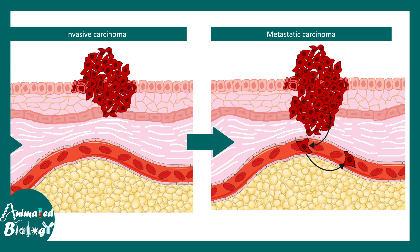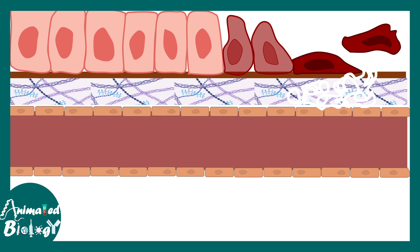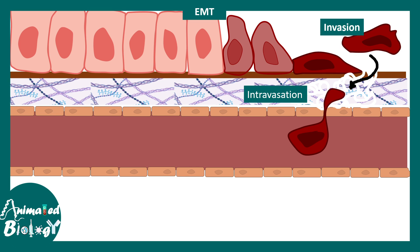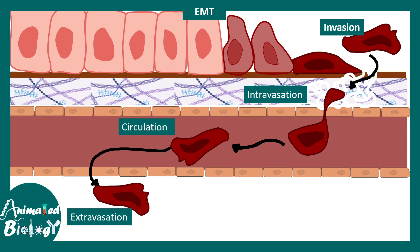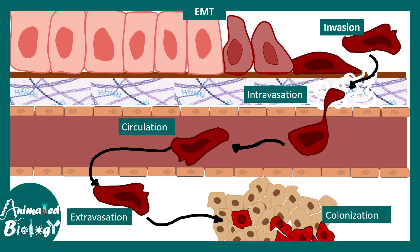There are distinct steps of metastasis. First, epithelial-to-mesenchymal transition occurs, where E-cadherin is converted to N-cadherin. Then invasion happens via matrix metalloproteinases, which dissolve the basement membrane and allow the cell to intravasate into blood vessels. The cell then circulates through the bloodstream and undergoes extravasation, after which it populates and colonizes a new tissue location. This process of metastasis is therefore quite complex.